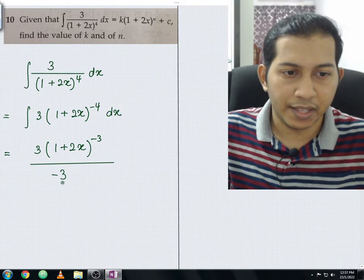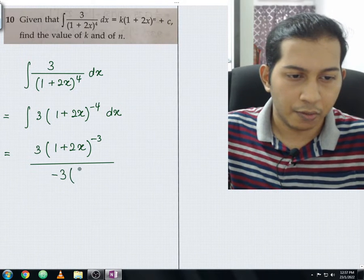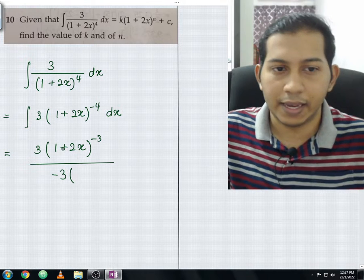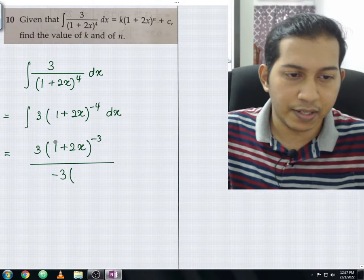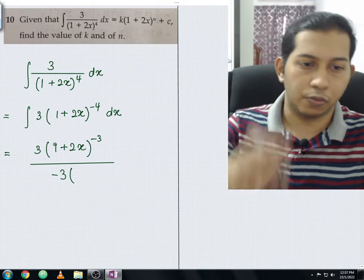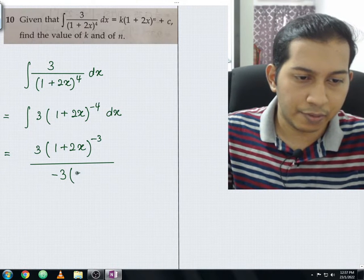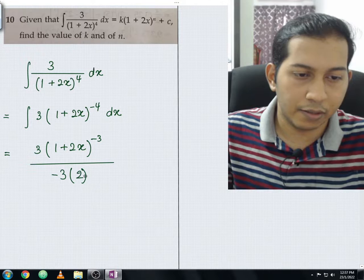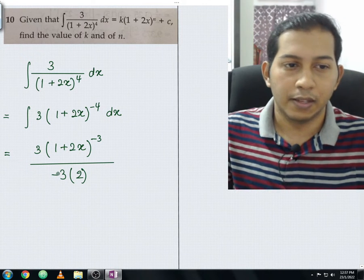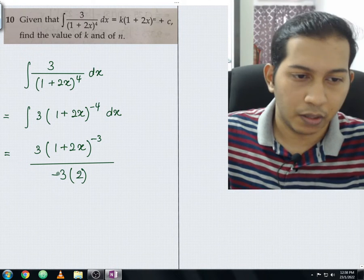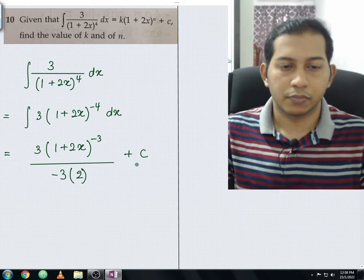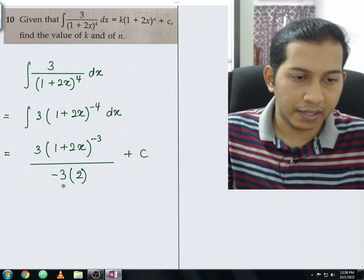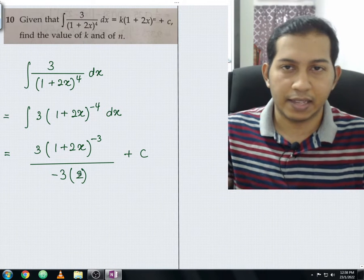And before that, you need to times with the differentiation of this bracket. So in this case, the inside bracket you have 1+2x. When you differentiate this, you should be getting 2. So this negative 3, you times with 2. Technically, the 2 will be timesing the denominator negative 3. Once all okay, then you plus with c. From here, negative 3 times with 2, you should be getting negative 6.